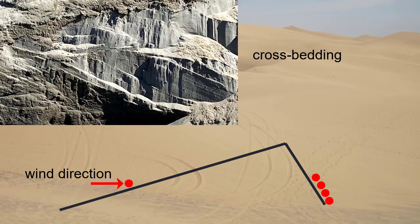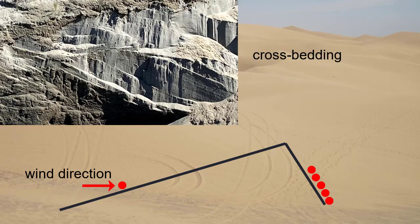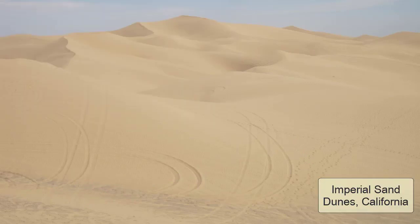This type of layering, produced during the formation of sand dunes, is called crossbedding. There are a few locations around the world where large dune fields form, including the Imperial Sand Dunes found to the east of the Salton Sea in California.